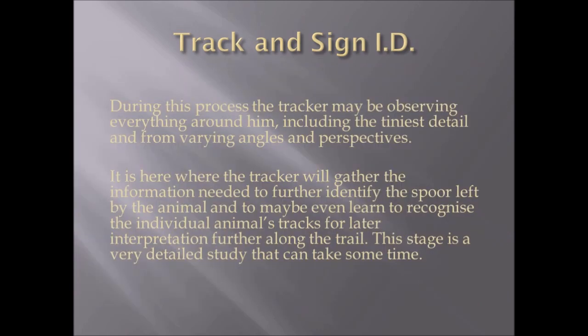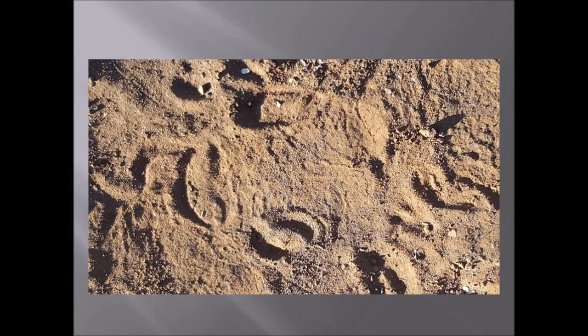During the process of tracking sign identification, the tracker may be observing everything around, including the tiniest detail and from varying angles and perspectives. It is here where the tracker will gather the information needed to further identify the animal's spoor and to learn to recognize individual animal tracks for later interpretation along the trail. This stage is a very detailed study that can take some time. Here we have a rhino track.